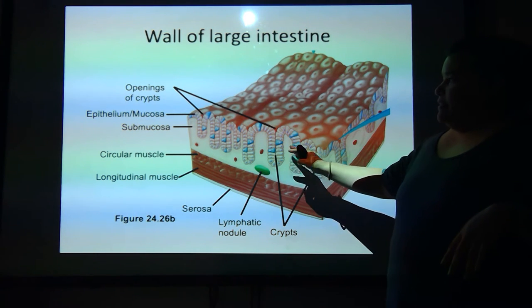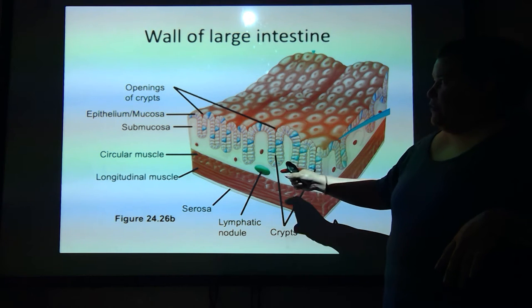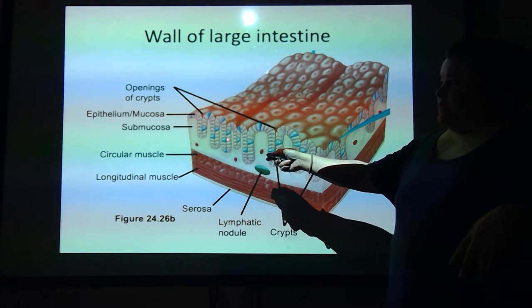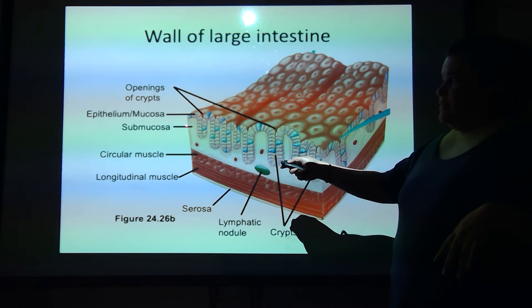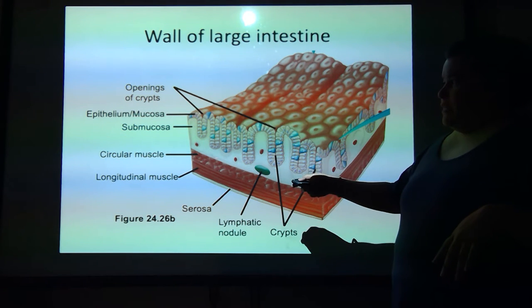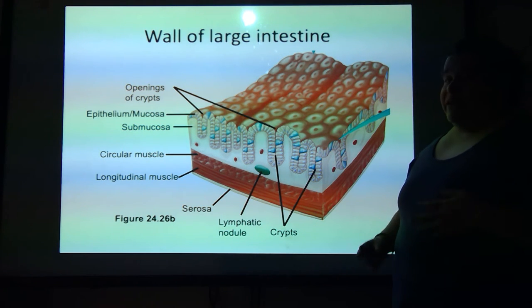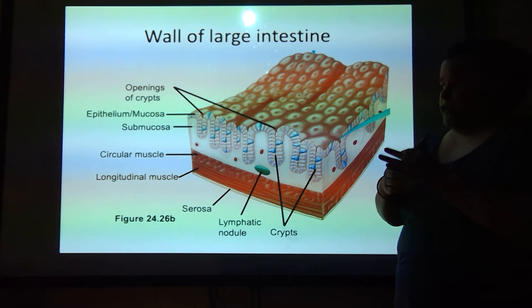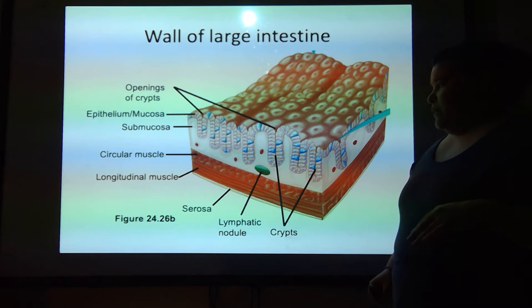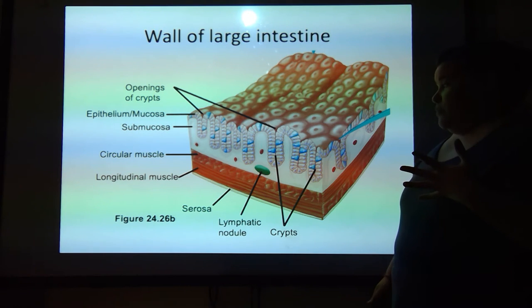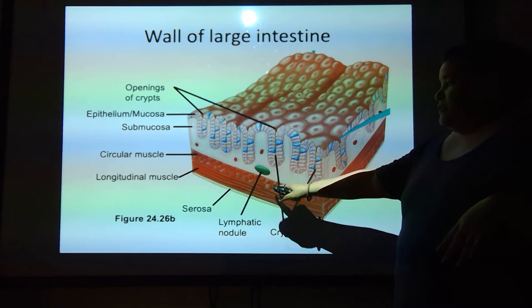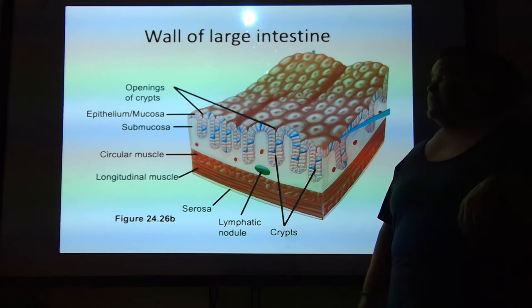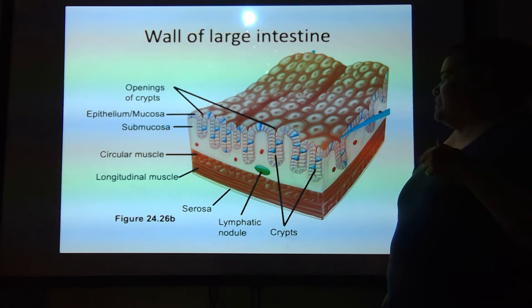We've got these pits here that are called crypts. We've got the mucosa, the lining, the submucosa. We've got the muscularis — you've got the circular layer and the longitudinal layer, just the two. And then outside, we've got the serosa. And even in the large intestine, we've got those lymphatic nodules, basically to help try and protect us.